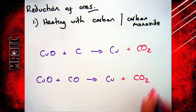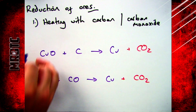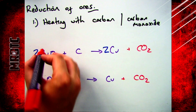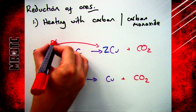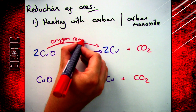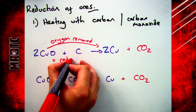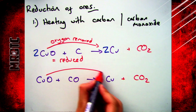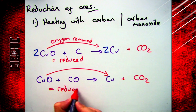Similarly, with the carbon monoxide reaction, the carbon monoxide will be oxidised and turned into carbon dioxide. You can find out which metals you would extract by heating with carbon in the video linked in the top right of the screen — have a look at that if you're not sure.